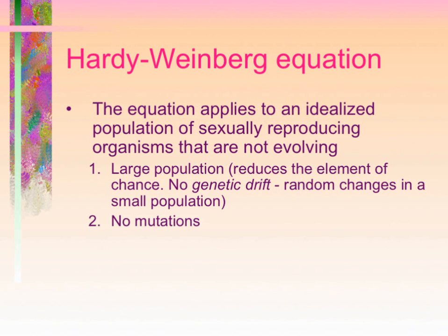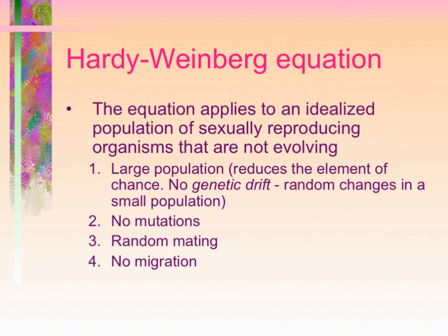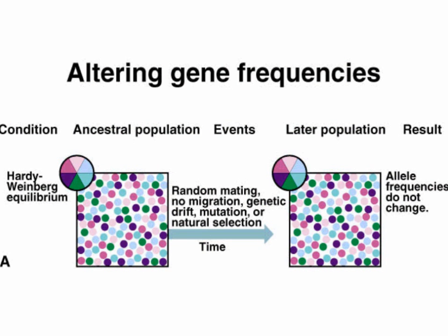No mutations — we're assuming no mutations are occurring, so there is no formation of alternate alleles at that position. Random mating must occur. Also, no migration — no immigration or emigration — as this would certainly affect allele frequency. And no selective advantage. This is a useful illustration to indicate the effects of Hardy-Weinberg equilibrium on a population.